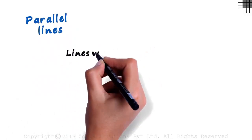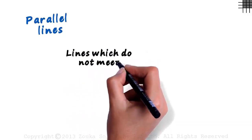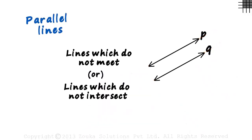We know that intersecting lines are lines that meet at a point. So are lines which do not meet parallel? Like line P and line Q here. They don't meet even if they are extended. Or maybe we can call them lines which do not intersect. Are these definitions correct?